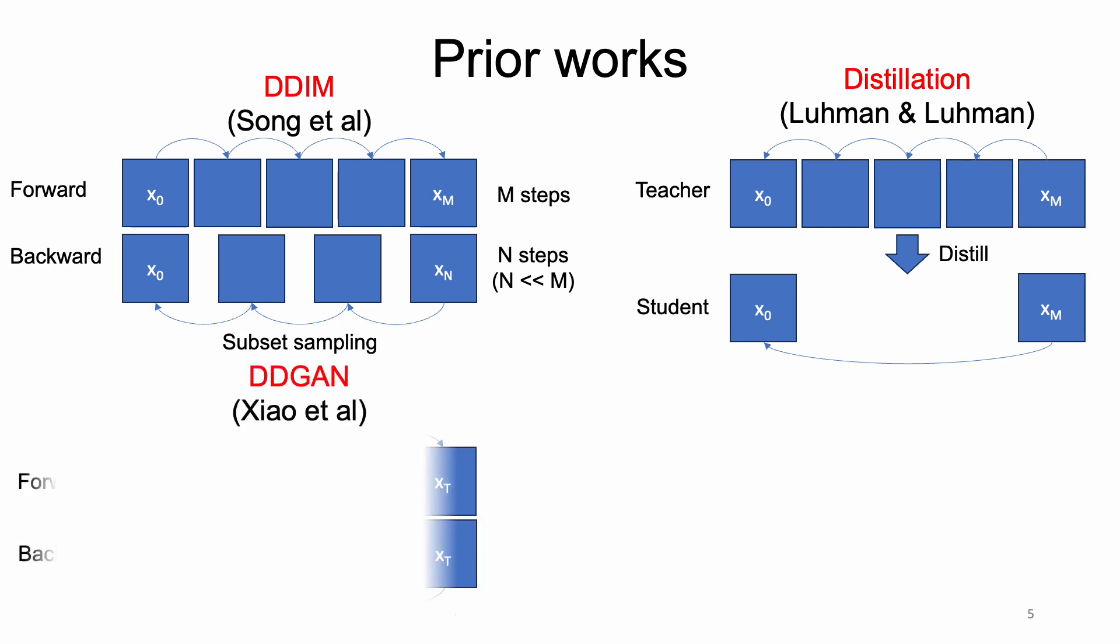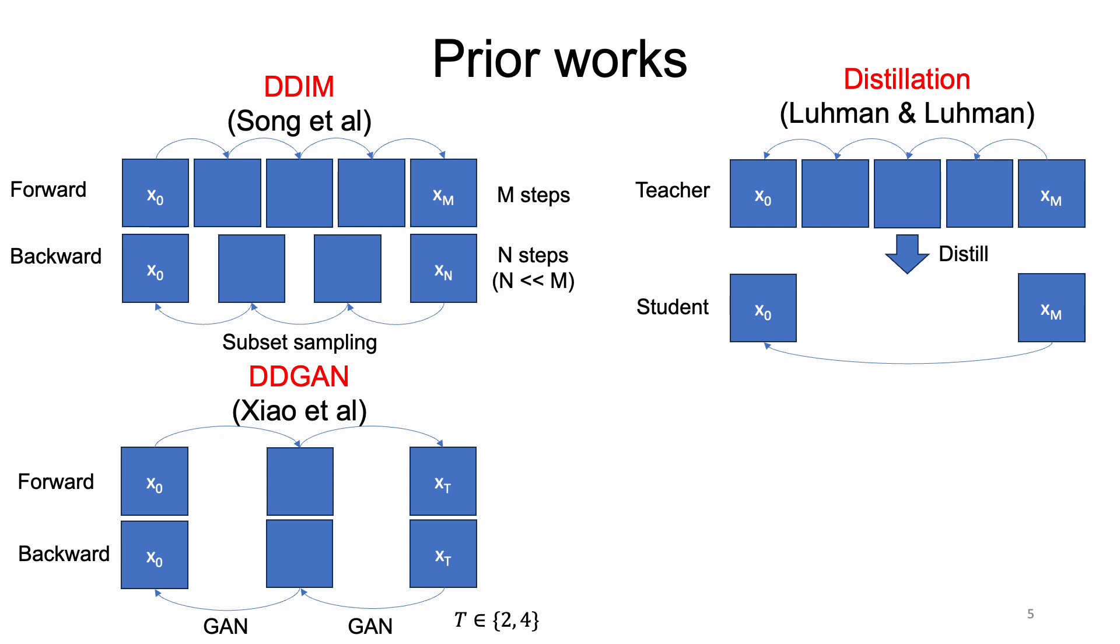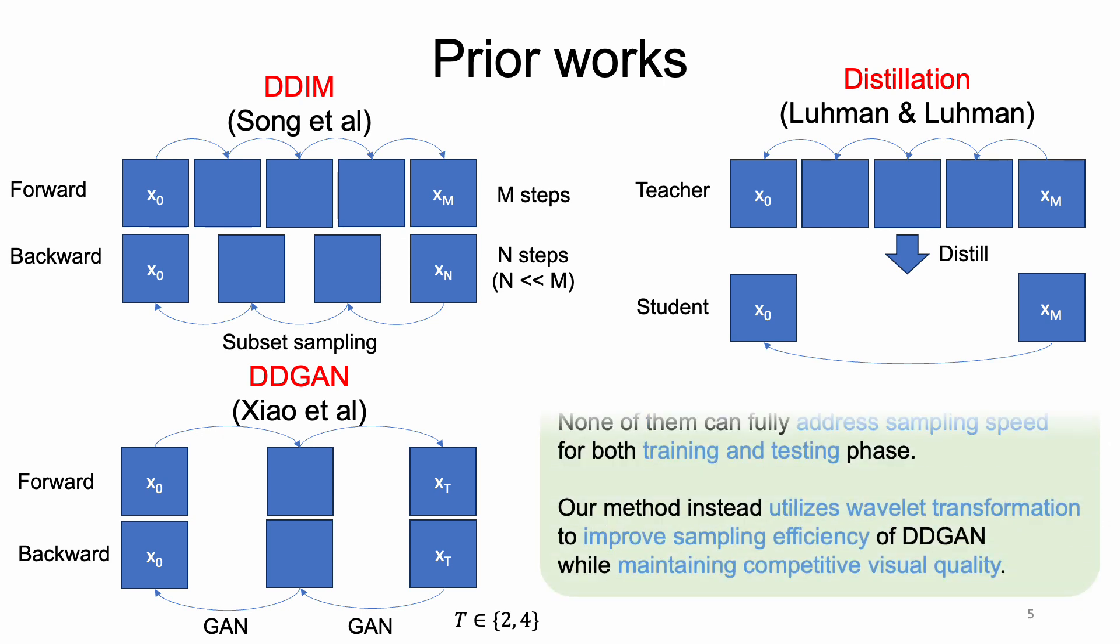DDGAN, a recent method, employs adversarial GAN to greatly reduce the number of steps to just a few, for example two to four. Still, its sampling speed lags behind its GAN counterparts. Existing works fail to address sampling speed adequately in both training and testing. To overcome this problem, we utilize wavelet transformation to improve the sampling efficiency and overall performance of DDGAN.